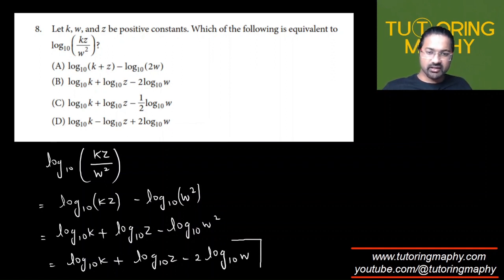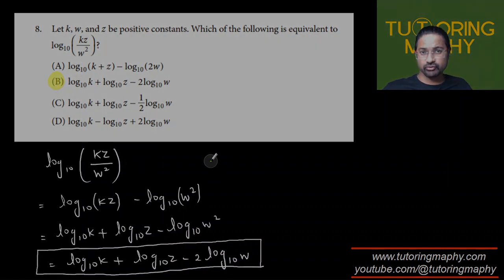So this is our final answer. And if you look at the options, I think log of k plus log of z minus, that's option B, correct. Yeah, that's option B, that's matching. So I hope this one makes sense.